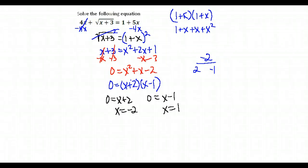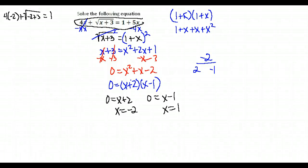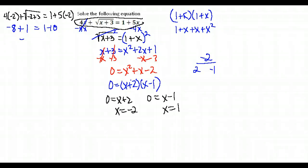Now I have to check both of those — you can't just accept them as answers until you've checked them. So we go back to our original problem and replace all of our x's. I'll check negative 2 first. So I have 4 times negative 2 plus the square root of negative 2 plus 3, and on the right, 1 plus 5 times negative 2. I get negative 8 plus the square root of 1, which is 1, on the left: negative 8 plus 1 is negative 7. On the right, 1 minus 10 is negative 9. Those are definitely not equal, so x equals negative 2 is extraneous — it's not one of my solutions.